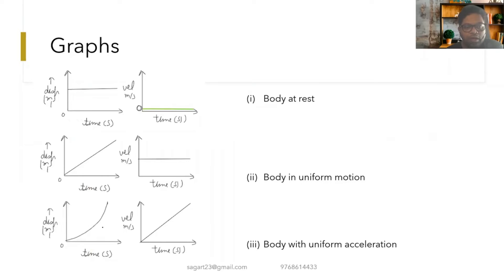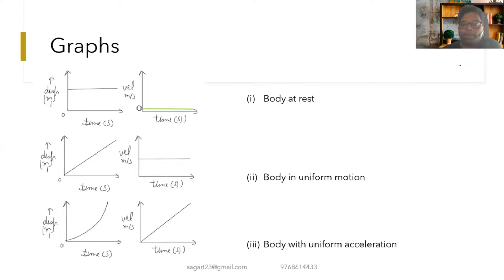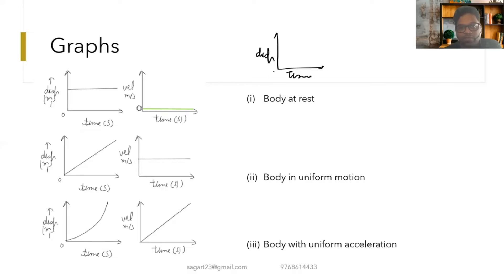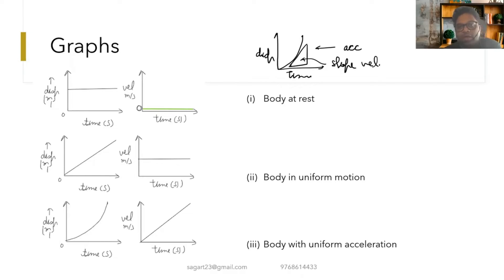A student asks how to find acceleration from a displacement-time graph. If the displacement-time graph is a curved line, that indicates the body is accelerating. At any point on the curve you can draw a tangent, and the slope of that tangent gives you the velocity at that point.